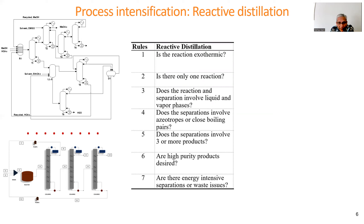Is the reaction exothermic? Yes, it needs to be exothermic — it will generate vapor. Is there only one reaction? Yes, but if there is more than one it can also be handled. Does the reaction and separation involve liquid and vapor phases? It needs to be yes. Does the separation involve azeotropes or close boiling pairs? Yes, because then the incentive to use reactive distillation is there. Does the separation involve three or more products? Yes — if there are more than two products, extra separation may be needed. Are high purity products desired? Yes, that's an incentive to use reactive distillation. Are there energy-intensive separations or waste issues? Yes, then there is the incentive to use reactive distillation.